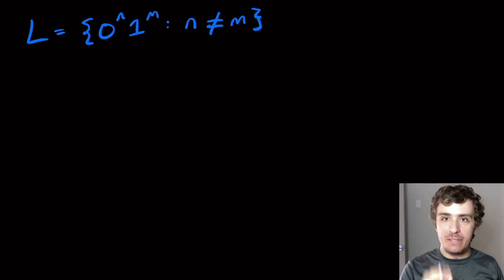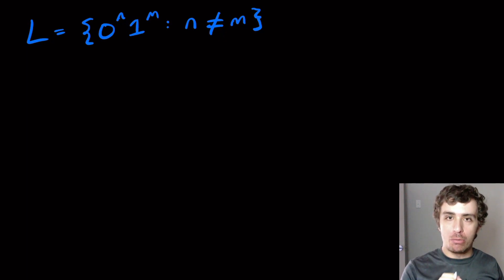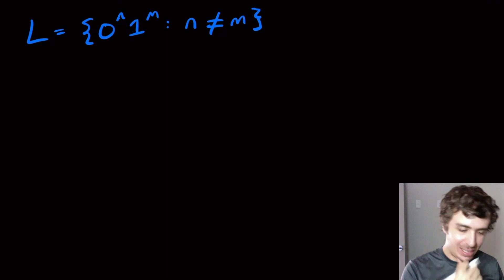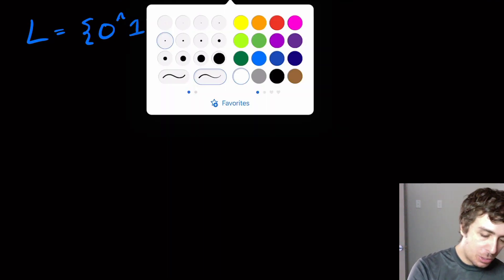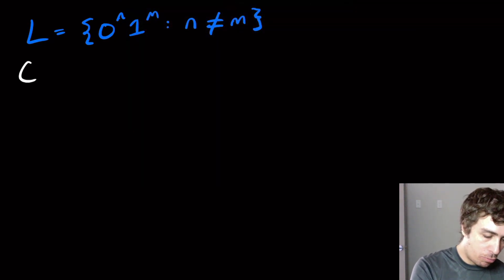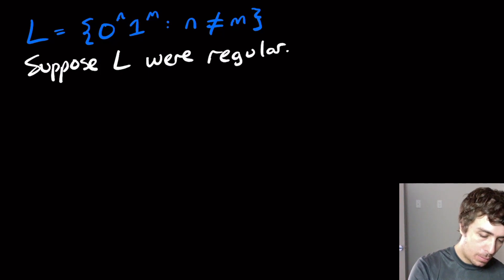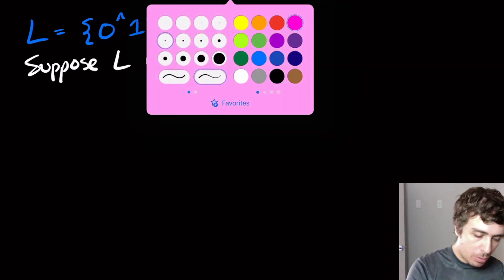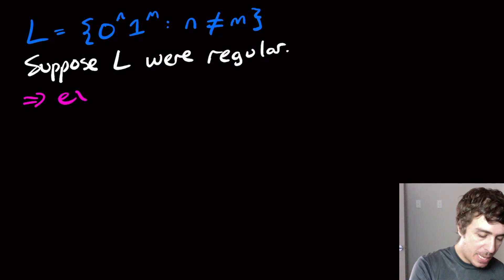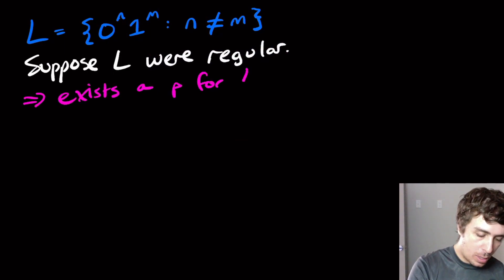This is a very challenging language, but I'm going to show you a really nice trick that I've done on the channel already. So, suppose that this thing is regular — suppose L were regular. Then what we know is that there exists a pumping constant p for L.